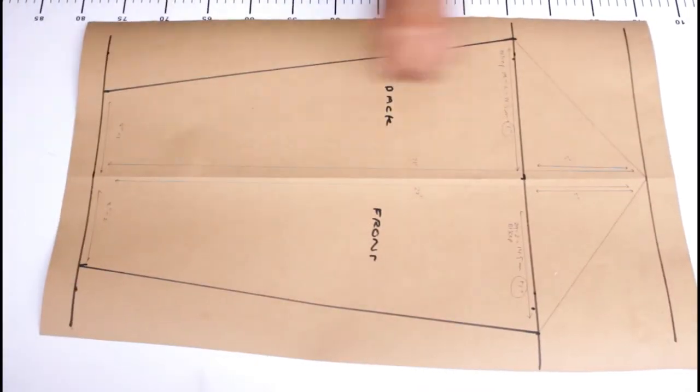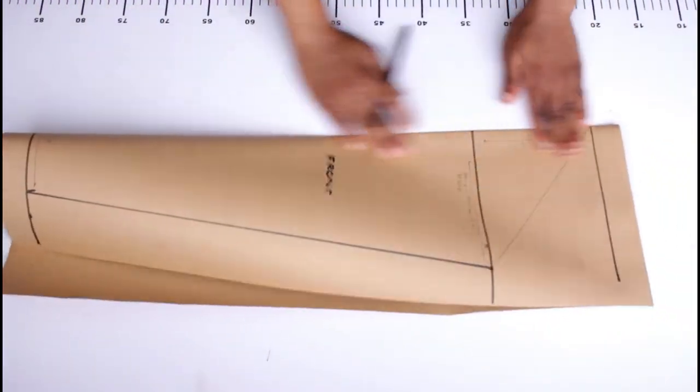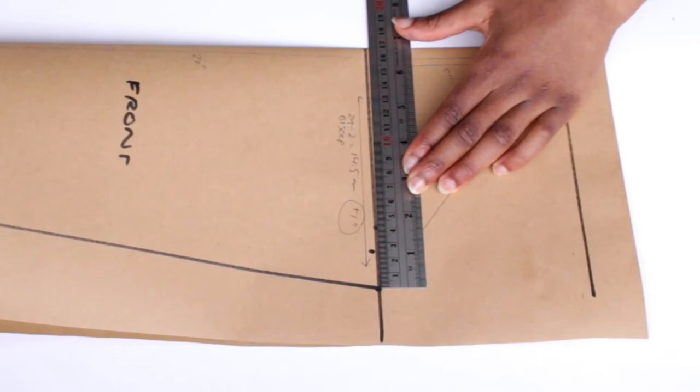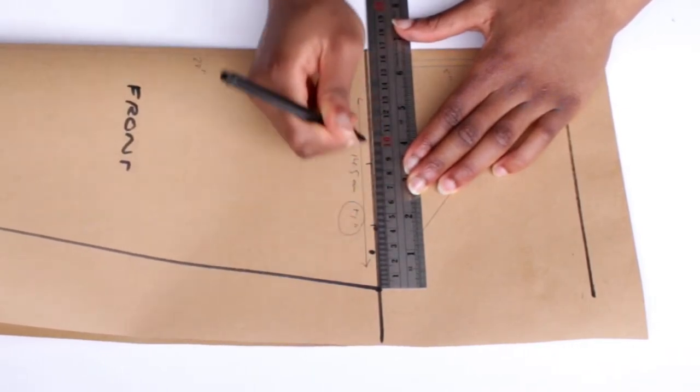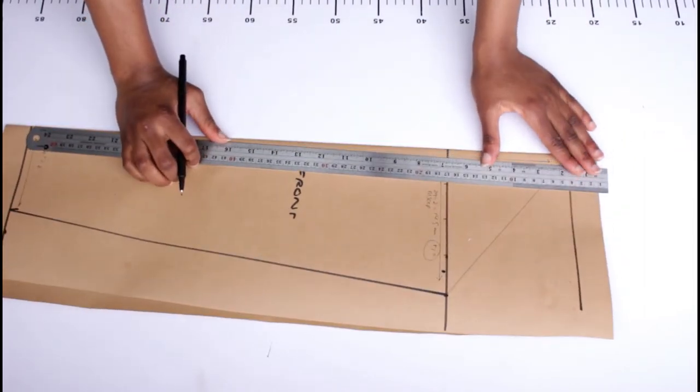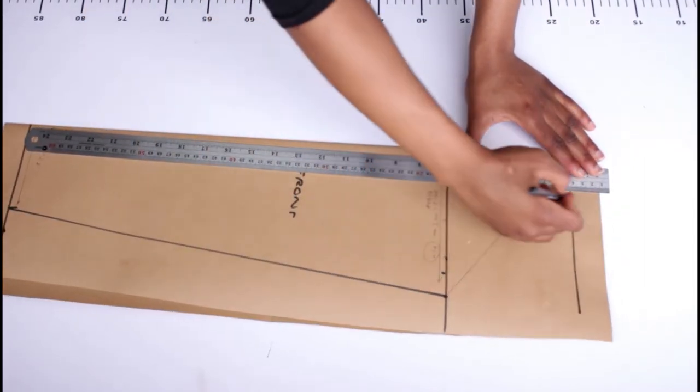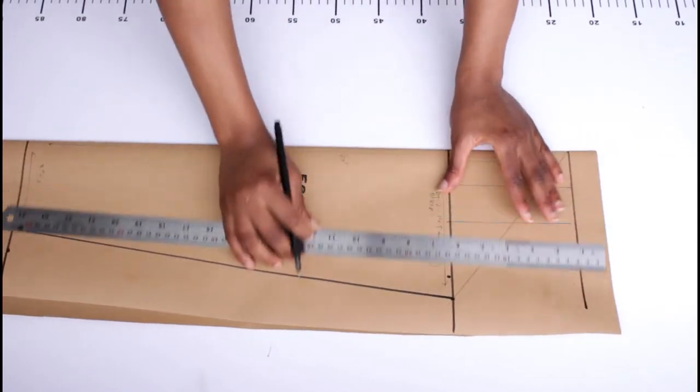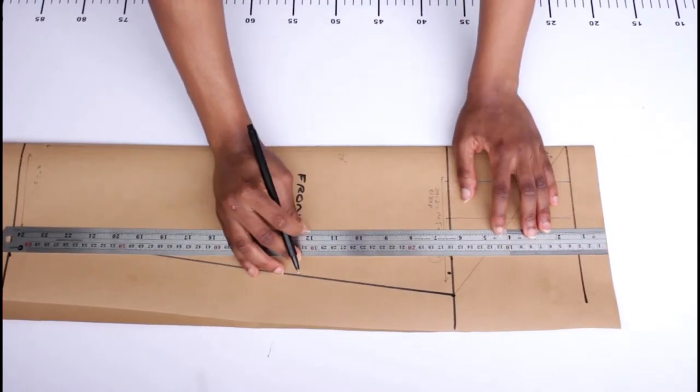Now for the front and for the back, what you're going to do is you're going to take the difference here at the bicep and divide it by four. So mine was about 17 so I just halved it and halved it again. Then you're going to draw a line going straight up from those four points because they're going to help us know how to properly draw the curves.